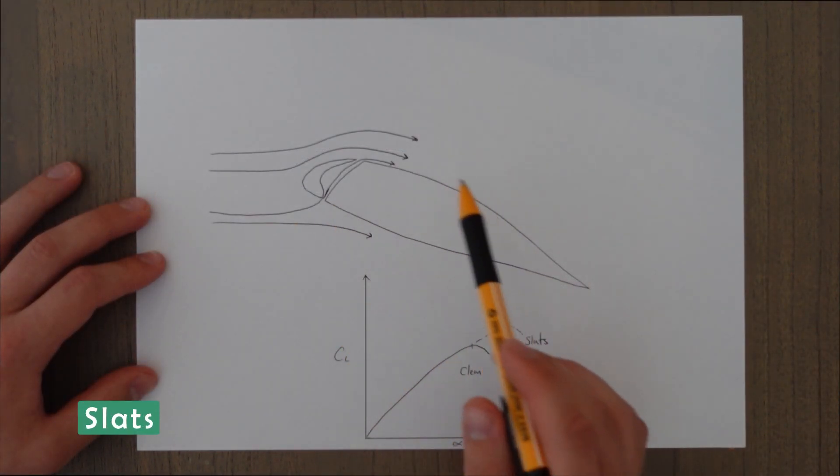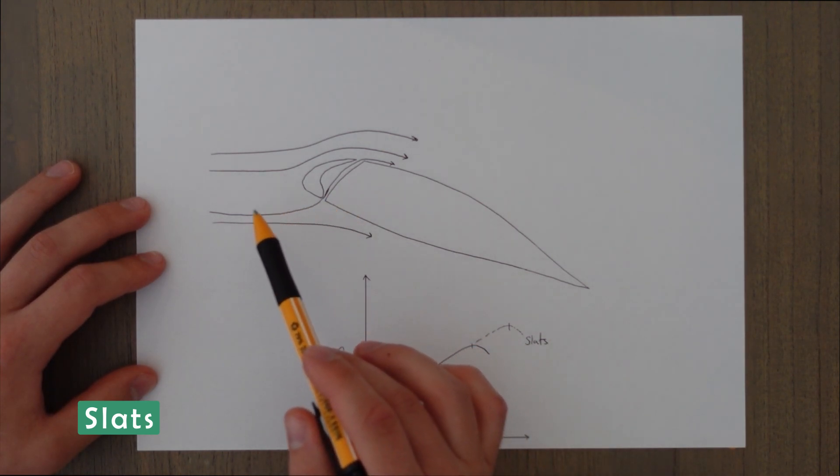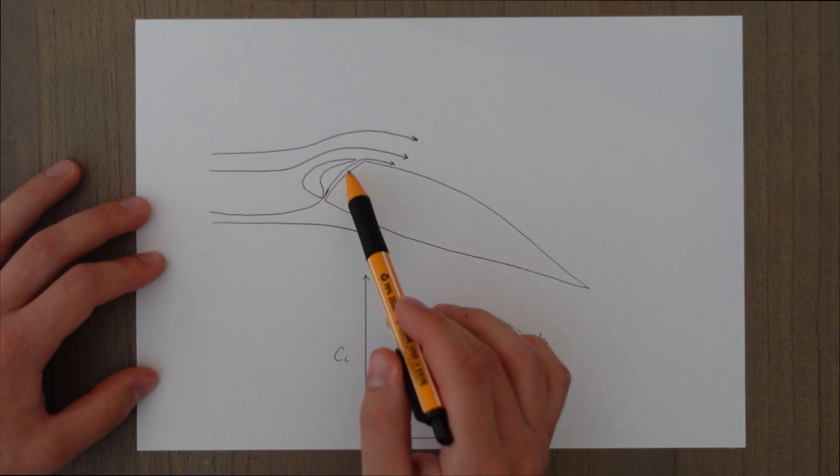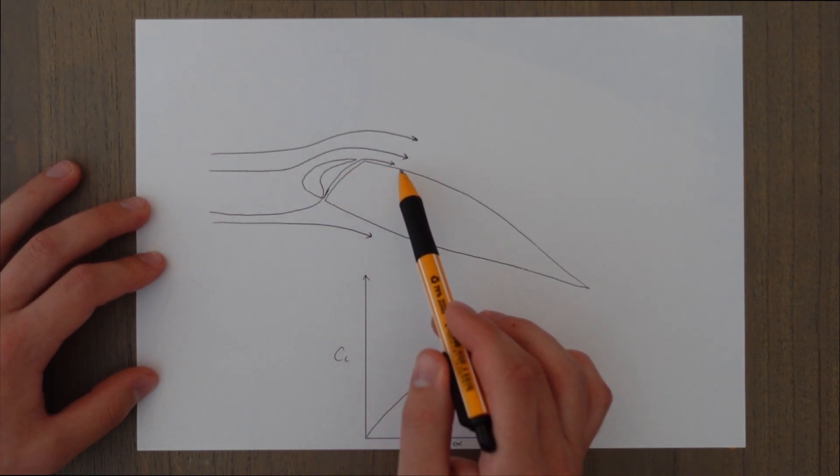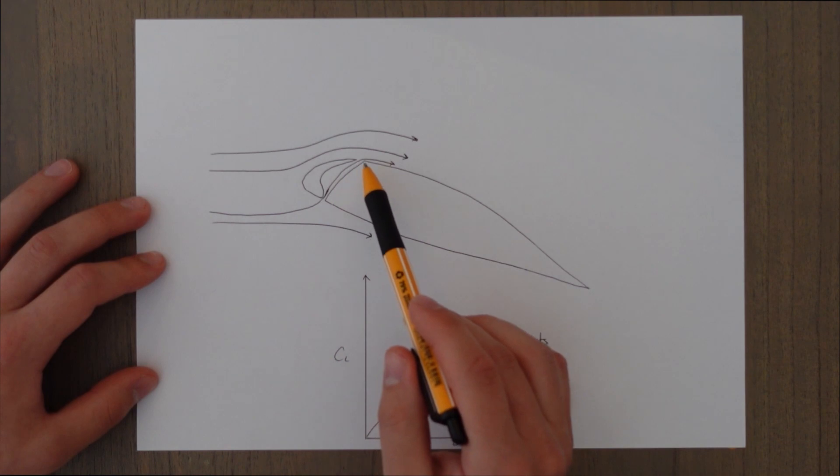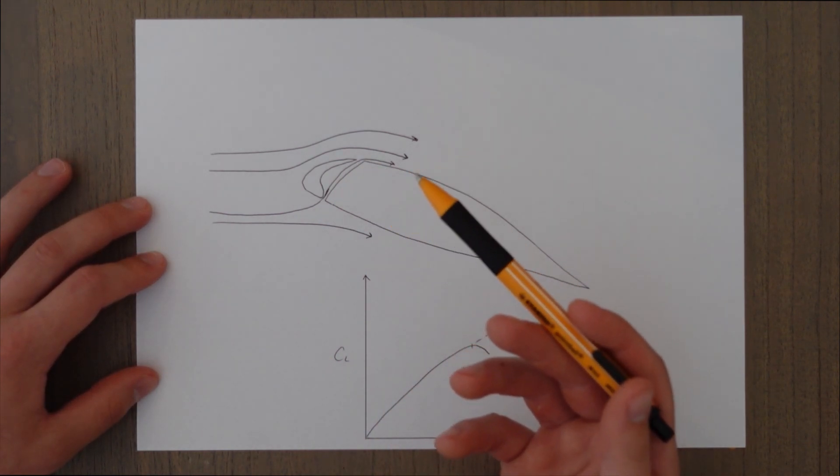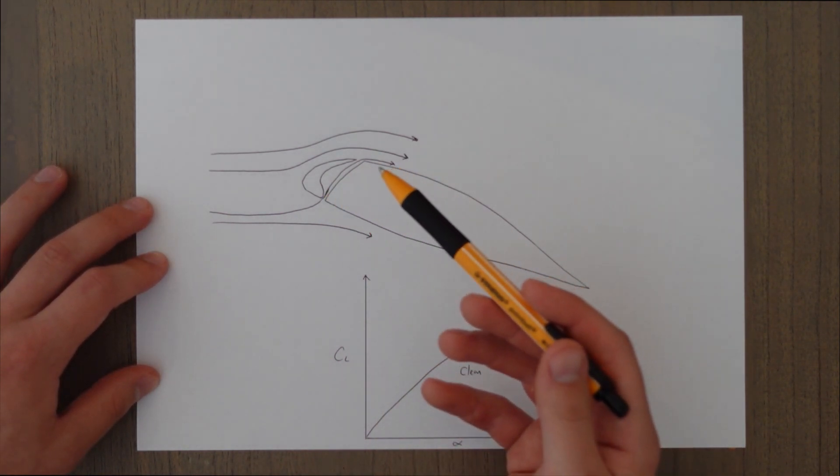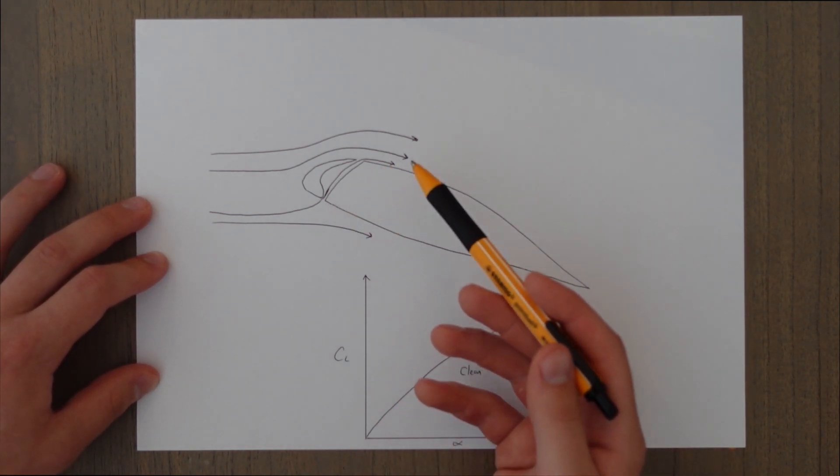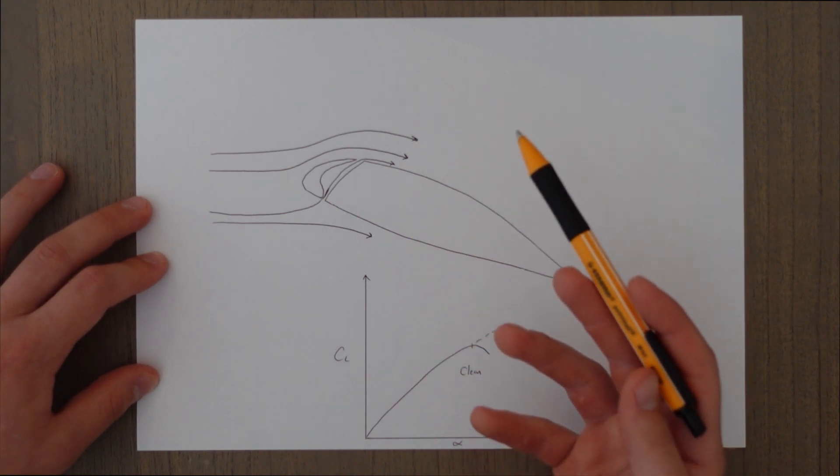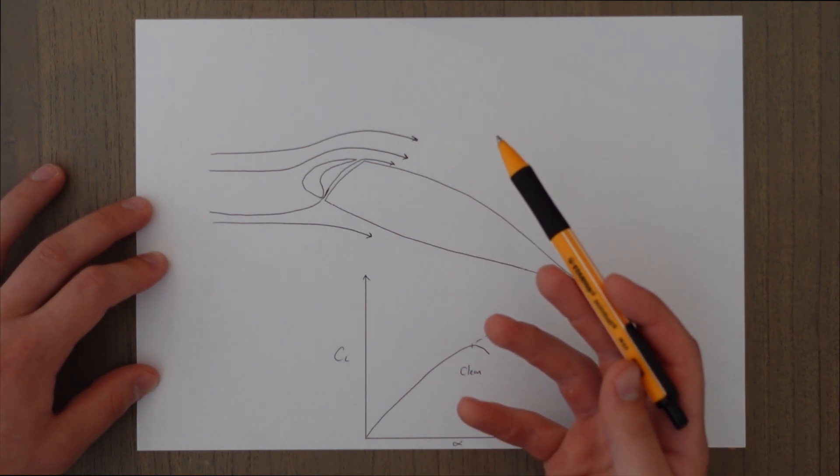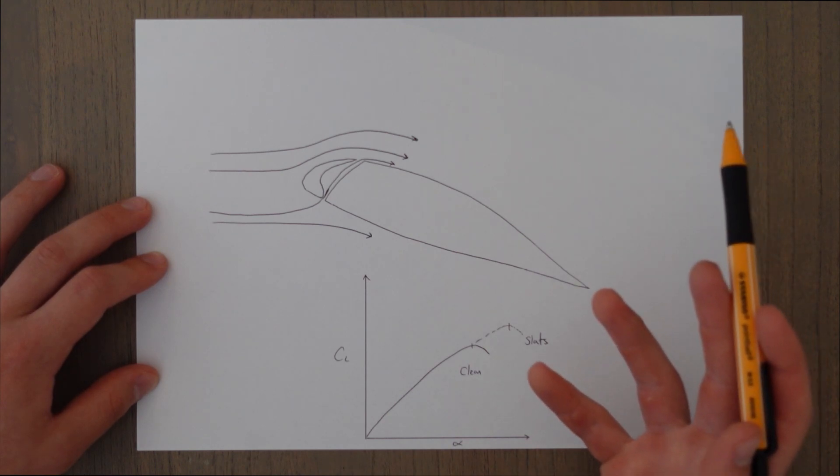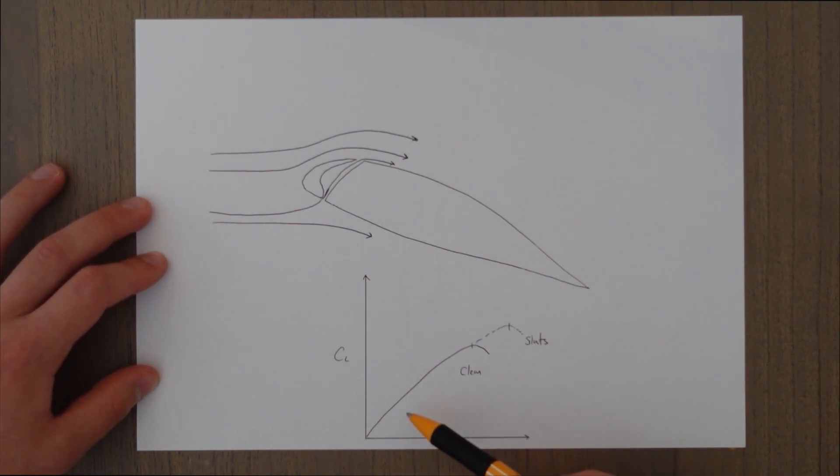Slats are devices on the leading edge that create a gap for air to travel through like this from the bottom surface through the middle of the wing and rejoin the airflow on the upper surface. The air that flows through this surface re-energizes the boundary layer. It adds more speed and more air to the boundary layer which will delay the separation of the airflow and allows for higher angle of attack to be achieved before stall which also means a higher CL max. So you can see on the graph here you've got the clean aircraft and then you extend the slats out you're starting to re-energize the boundary layer and it means you get to higher critical angle of attack before you stall.